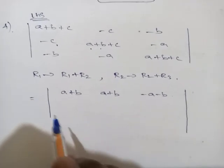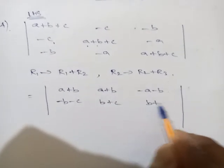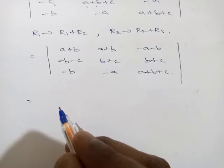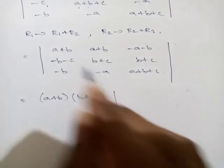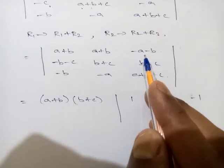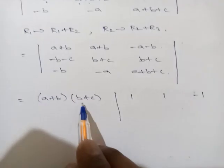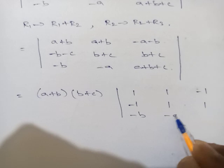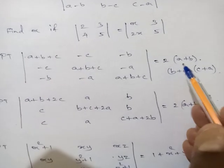Third row write as it is: −b, −a, a+b+c. Now take out (a+b) from row 1 and (b+c) from row 2 as common factors. Row 1 becomes (1, 1, −1), row 2 becomes (−1, 1, 1), giving (a+b)(b+c) outside. Third row: −b, −a, a+b+c.